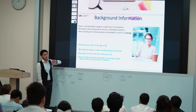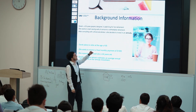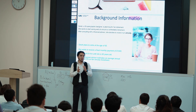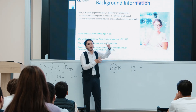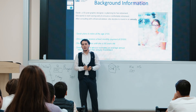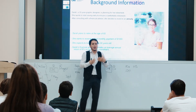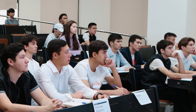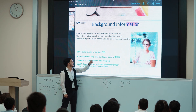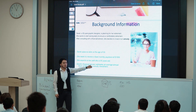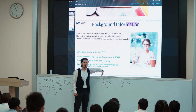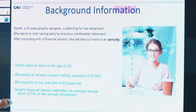Sarah hired a financial advisor and they decided to invest in an annuity to have a stress-free retirement — a stream of income rather than being dependent on anything else. Key information: Sarah plans to retire at age 65 and wants a fixed payment of $1,000 on a monthly basis, which is 12 times a year.